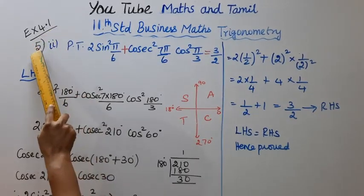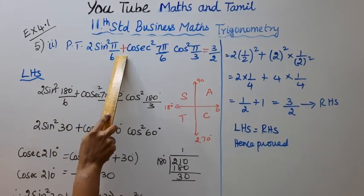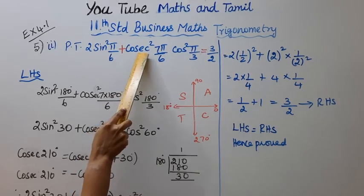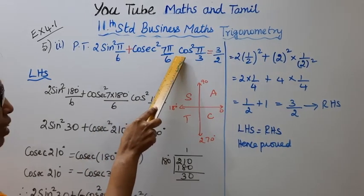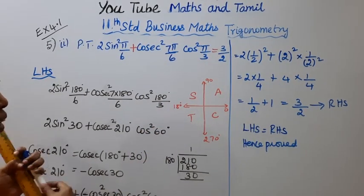Exercise 4.1, 5th problem, second submission. Prove that 2 sin squared pi by 6 plus cosecant squared 7 pi by 6 into cos squared pi by 3 equals 3 by 2.